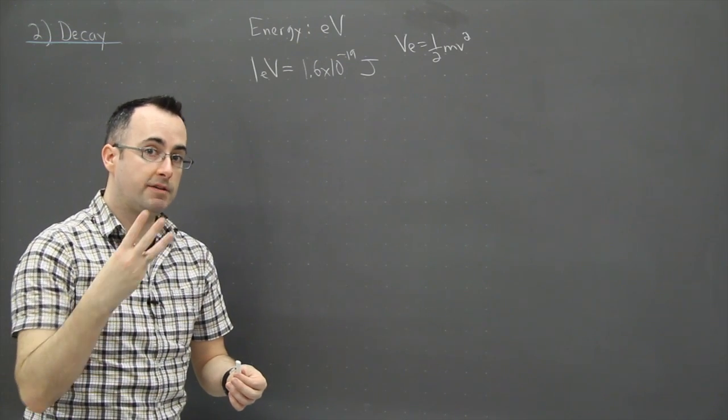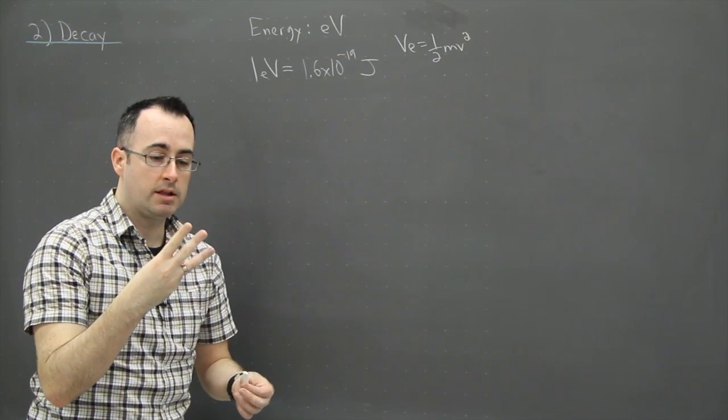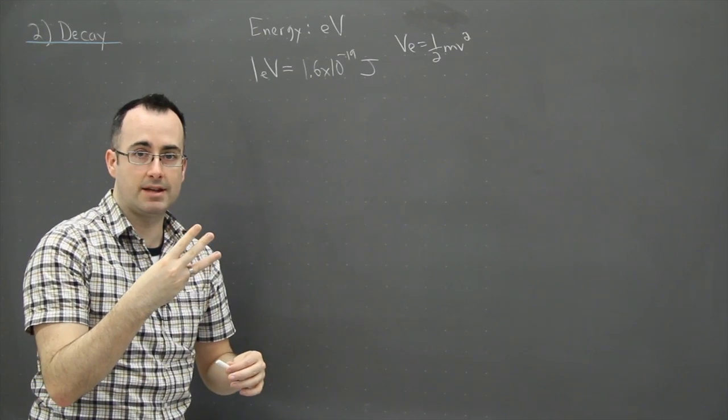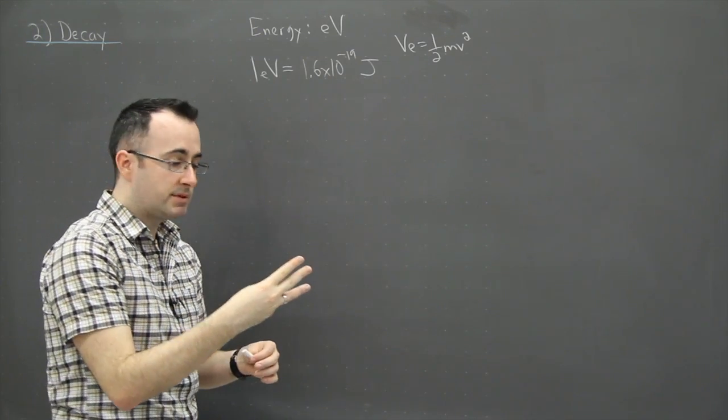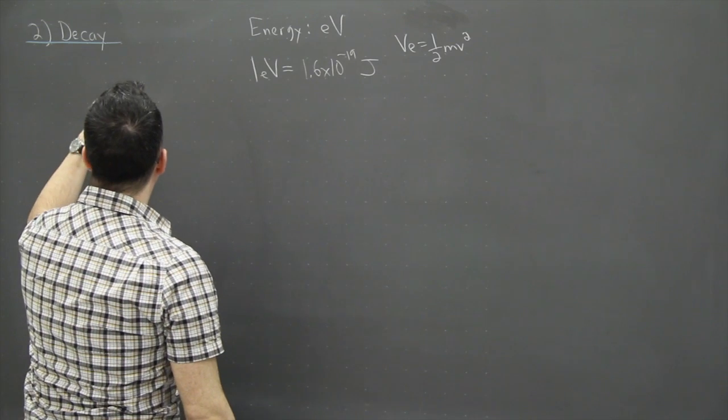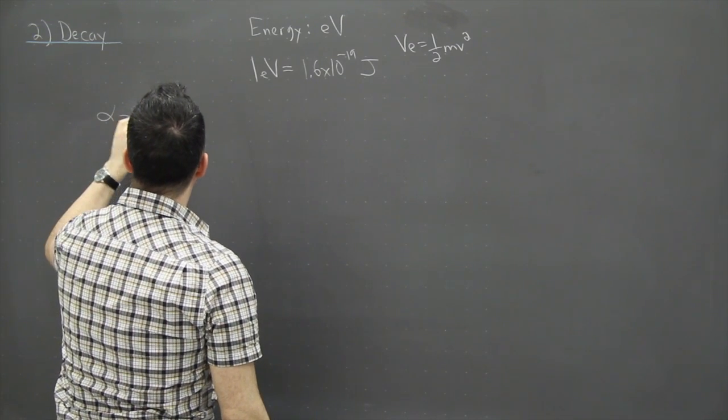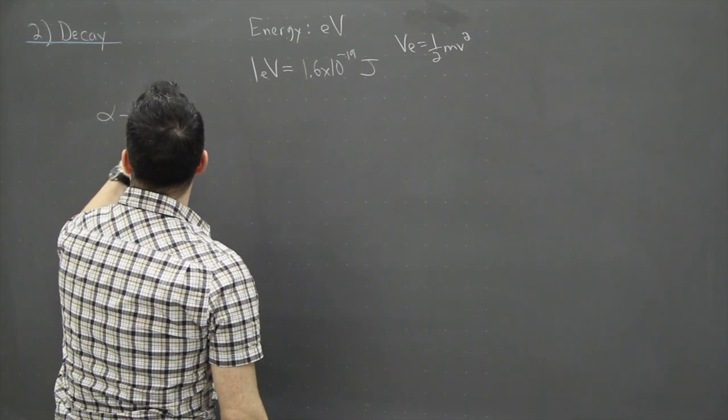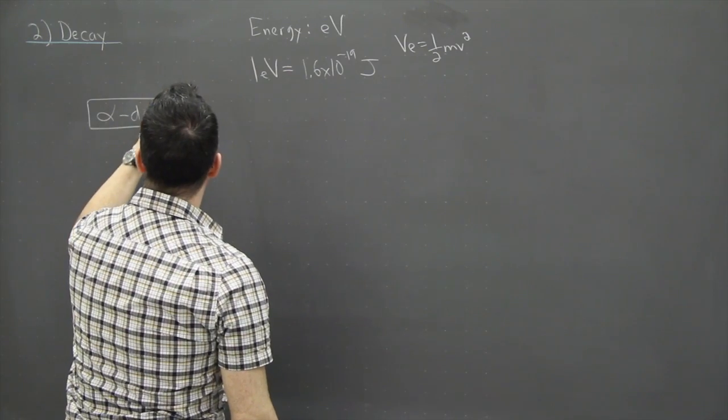But the key here is that there's three different main types of decay that we talk about in physics SL and HL. Those three types are the following. So the first type is called alpha decay. That's going to be the first one. Okay so alpha decay. What does that mean?